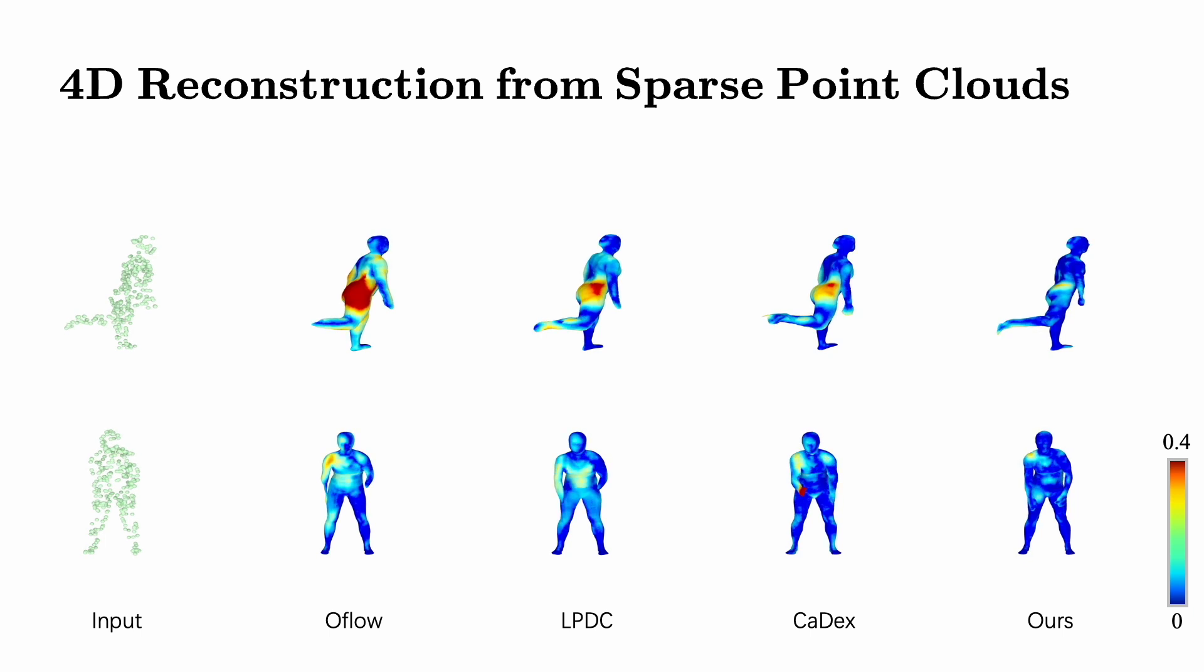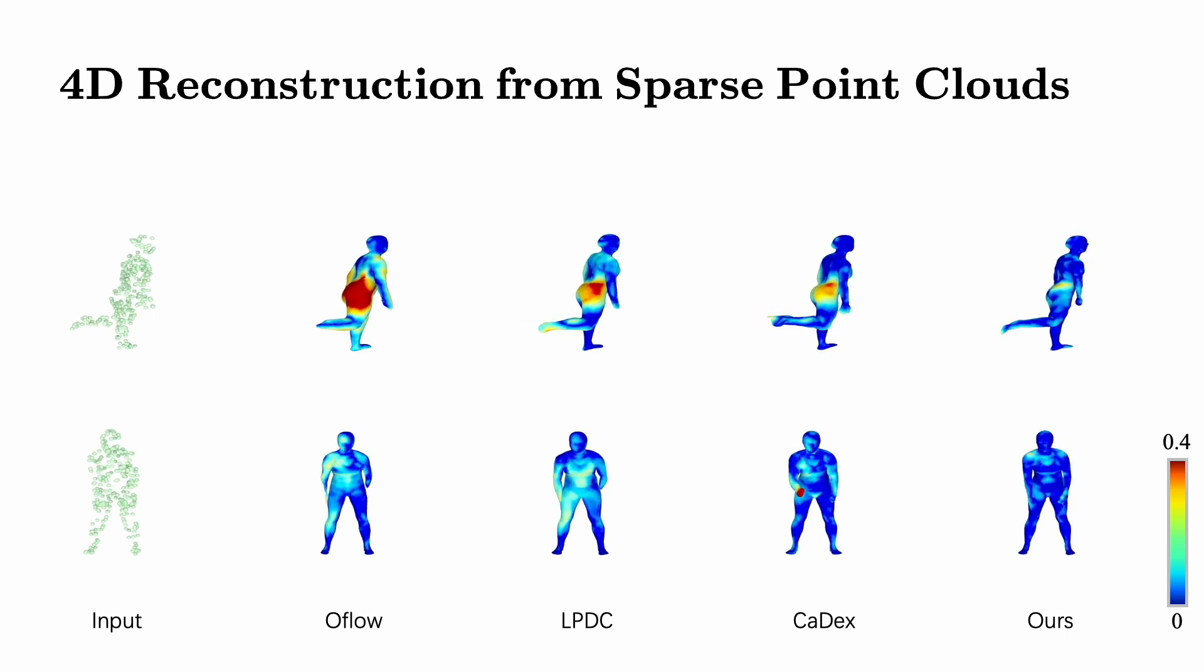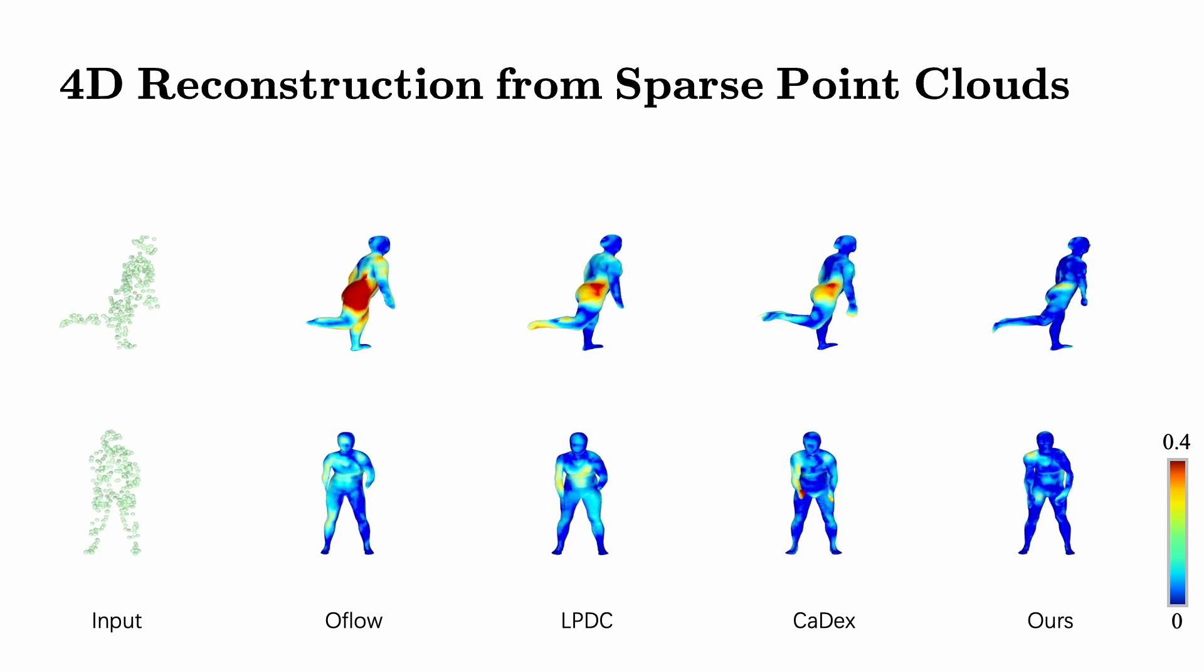Here we see the results of our 4D shape reconstruction from sparse point clouds. We use chamfer distance to create error maps, visually comparing our reconstructions with the ground truth. Our method excels in reconstructing more accurate geometry, especially in fast-moving parts, outperforming state-of-the-art methods.